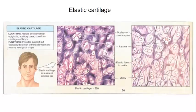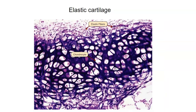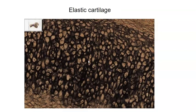Lastly, we have elastic cartilage. It's similar to hyaline, but we have elastic fibers. We still have lacunae with chondrocytes inside, but the difference is darkly stained elastic fibers in the extracellular matrix. Here's a chondrocyte sitting in a lacuna with elastic fibers visible in the matrix. Different stains show the fibers in different colors — purple, red, or black — so be aware that the same tissue can look different depending on staining.